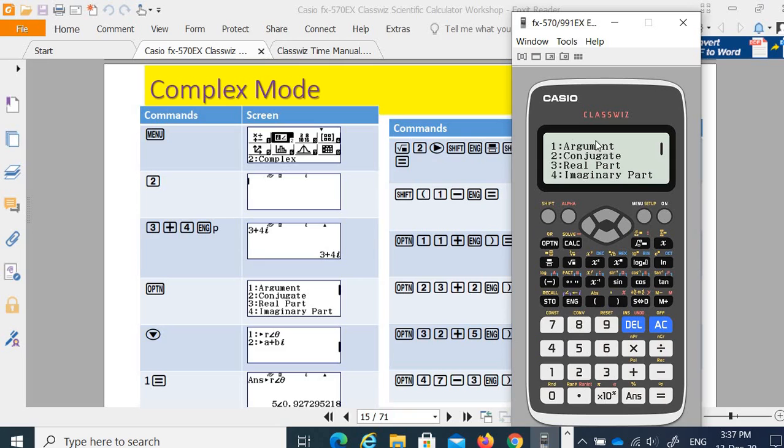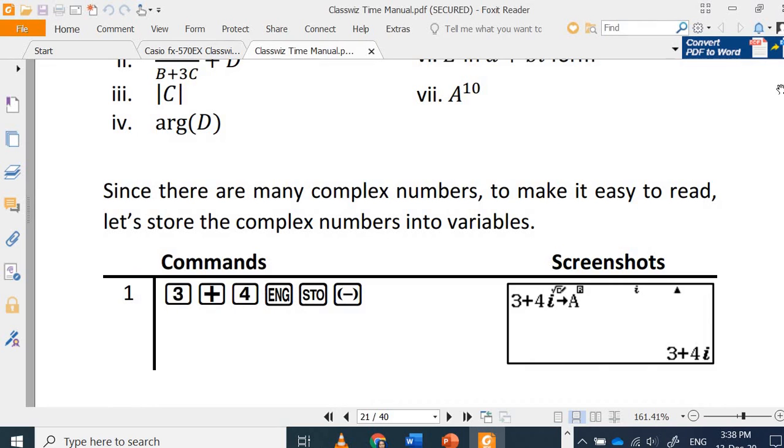So in the options here you can find the argument, conjugate, real part, imaginary part, to convert between a plus bi to r and theta, or from r and theta to convert back to a plus bi.